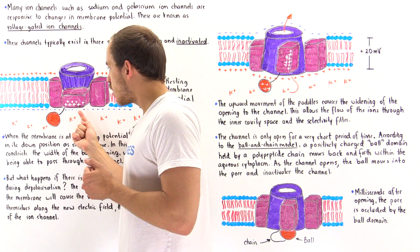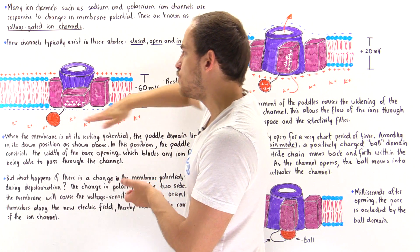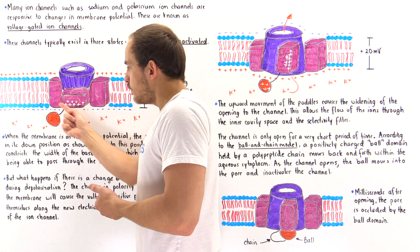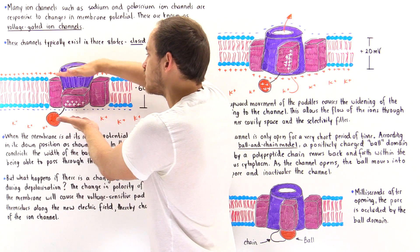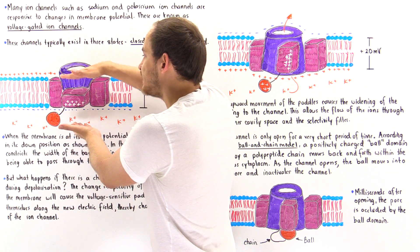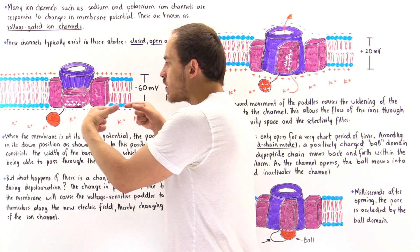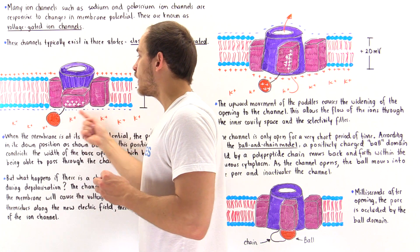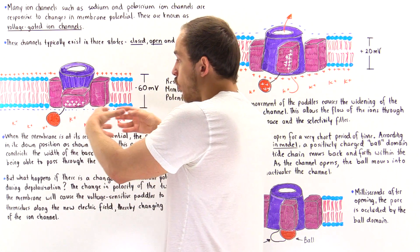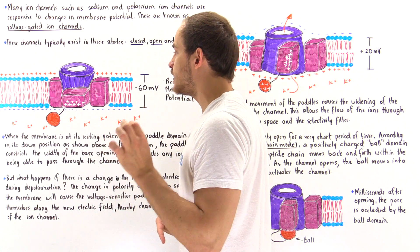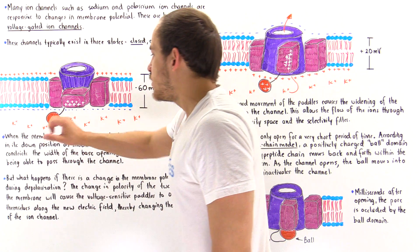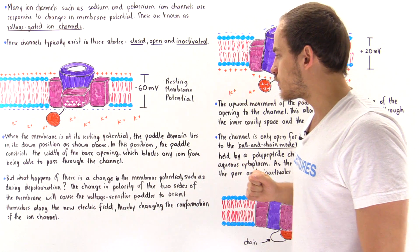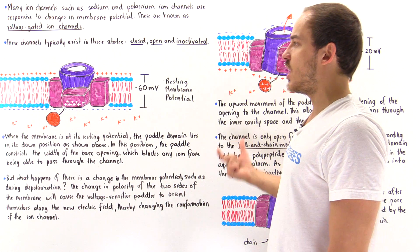Whenever we place positive charges inside an electric field, those charges will orient themselves along that field. In this case, the fixed paddles with their positive charge will try to get as close to the negative charge as possible, so they orient themselves downward as shown in the diagram. When they orient downward, that restricts the size of the pore opening on that side of the membrane, and the paddle domain constricts the width of that base opening of the pore.